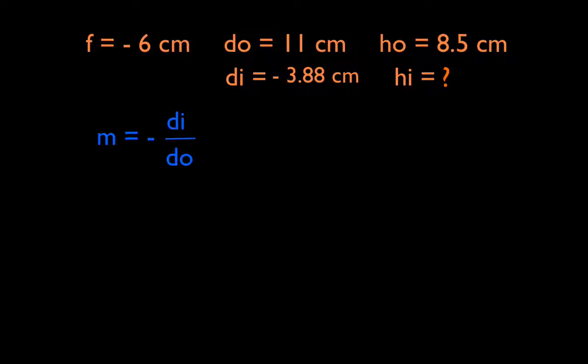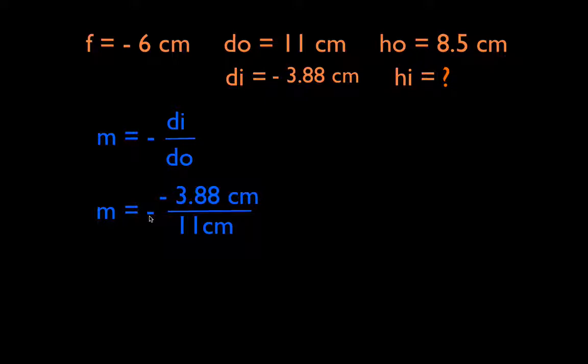Let's go on and get the image height. To get the image height, we use the magnification equation: magnification equals negative DI over DO. It's important to use this minus sign. The magnification equals negative 3.88 divided by 11. We have a minus sign and a negative DI, so it's a negative divided by a negative, giving us a magnification of positive 0.353. That magnification is less than 1, which means the image is going to be smaller than the object — as expected with a concave lens.